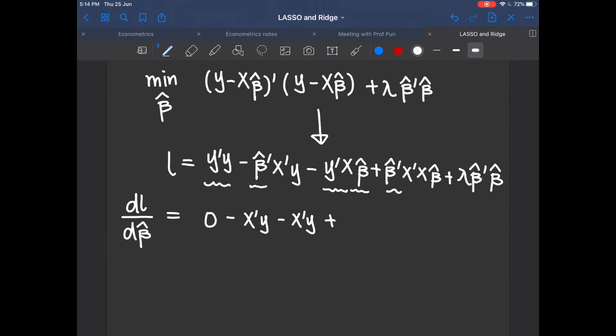The fourth term is a quadratic term with respect to beta hat. So you add a 2 in front and then remove the first beta hat transpose. So you get x transpose x beta hat. Same for the last term. It's also quadratic with respect to beta hat. So it gives you 2 lambda beta hat. And at a minimum point, the first derivative should be equal to 0.